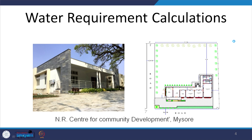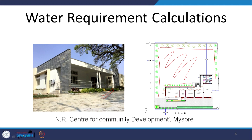Let us look at the example which is a community development center in Mysore — this is a real case. This is the site and the small building seen here. There are shrubs in the front, a little behind, and trees all around, with the entire surrounding area maintained as green.